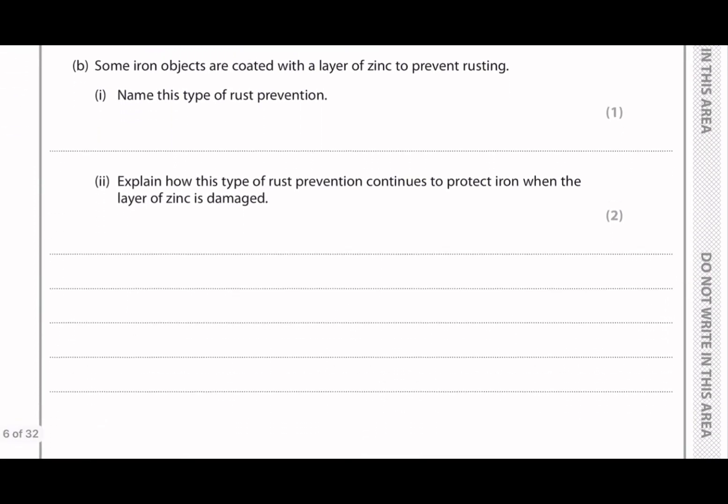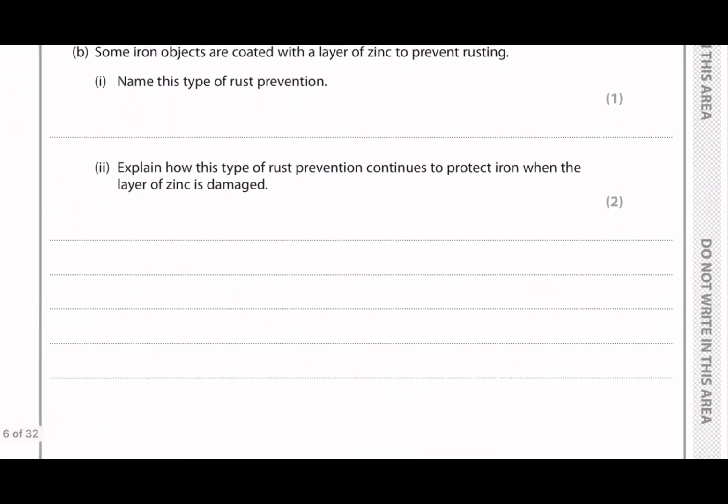Moving on to question B. Some iron objects are coated with a layer of zinc to prevent rusting. And name this type of rust prevention. So this type of rust prevention is called galvanizing. Or you can also write galvanization.